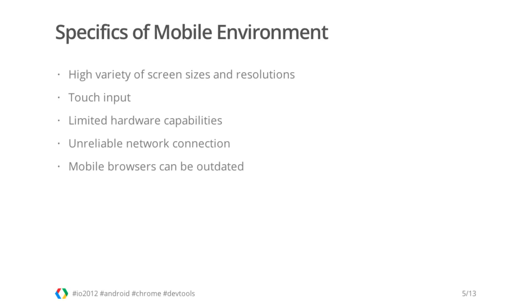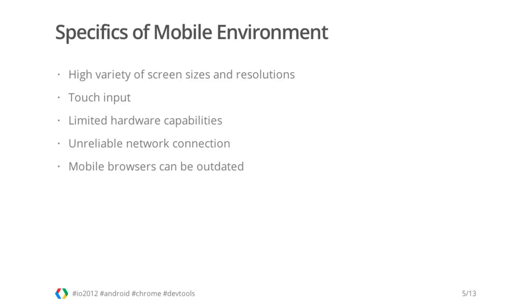There are several points you need to keep in mind while planning the development of your mobile website. First of all, there are a lot of different devices in the wild — cheap phones with small screens on one side of the spectrum, and high-end phones with high-density screens and tablets on the other, and everything in between. Not to mention that every device can be used in portrait or landscape orientation. Handling touch input requires a different strategy compared to traditional keyboard and mouse input — it's more intuitive, but less precise, and typing on an on-screen keyboard is much slower than on a physical one.